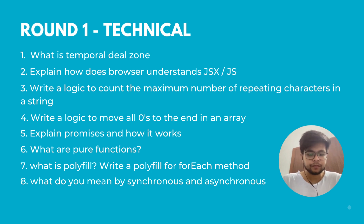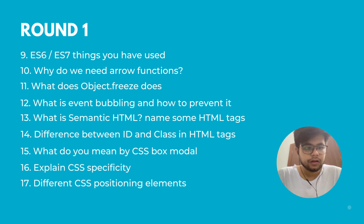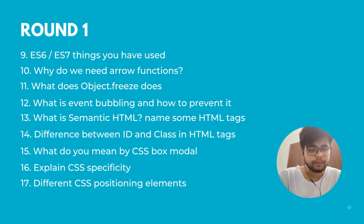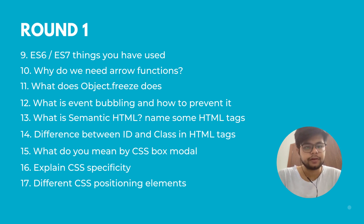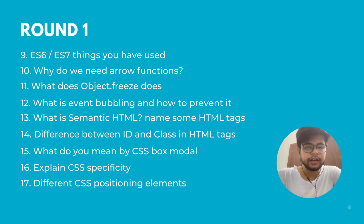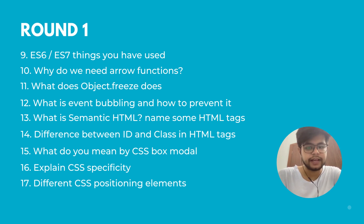The eighth question was: what do you mean by synchronous and asynchronous operations in JavaScript? The ninth was: what are the ES6 and ES7 features you've been using in your projects? I mentioned ES6 features I've used. The tenth was: why do we need arrow functions? Here you need to explain the difference between arrow functions and normal functions, and how arrow functions are helpful.